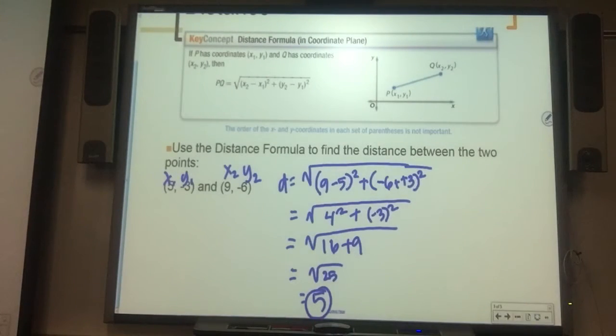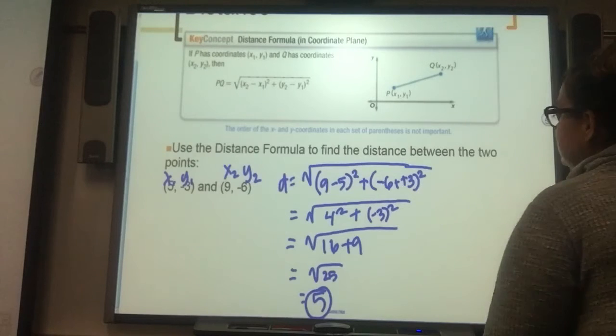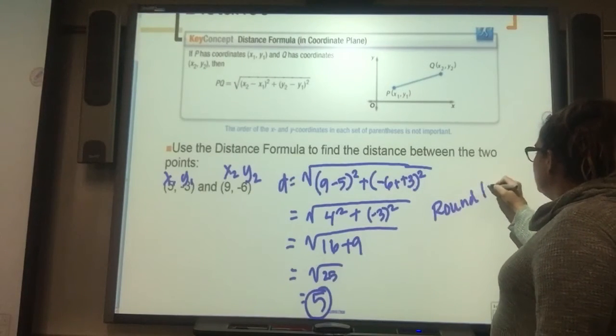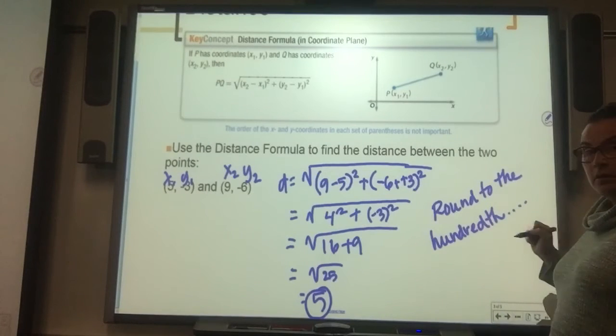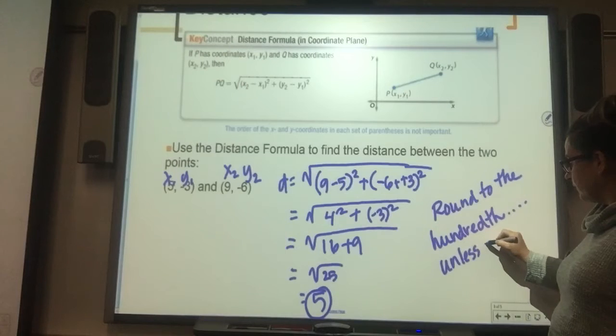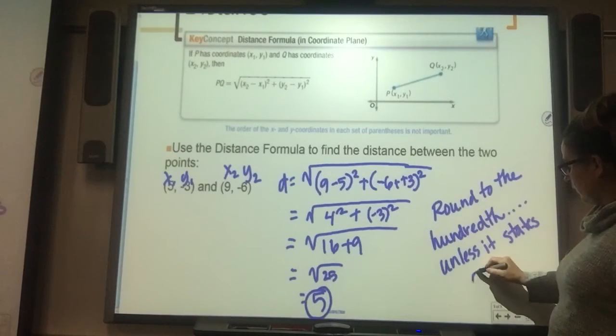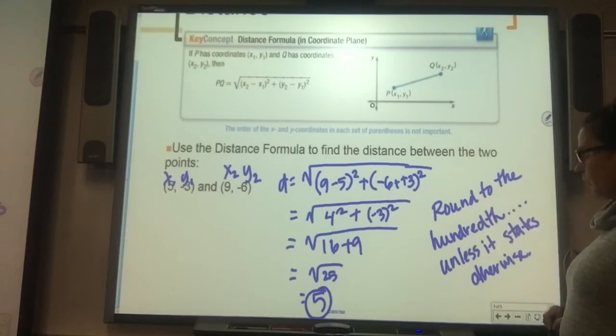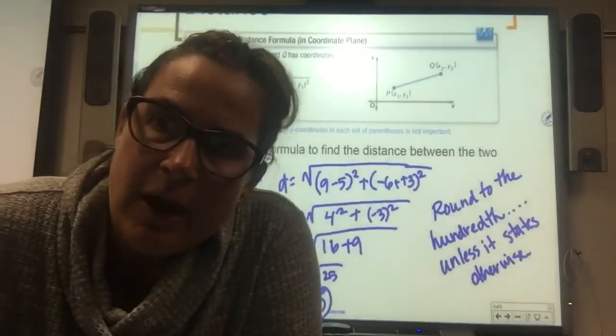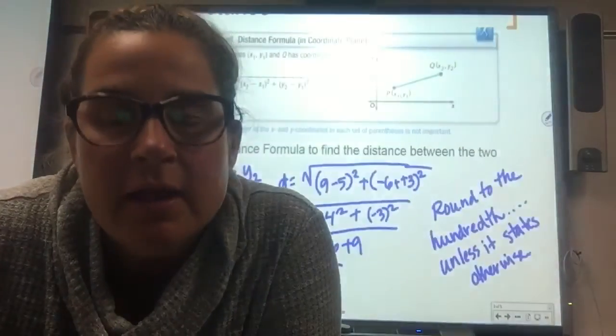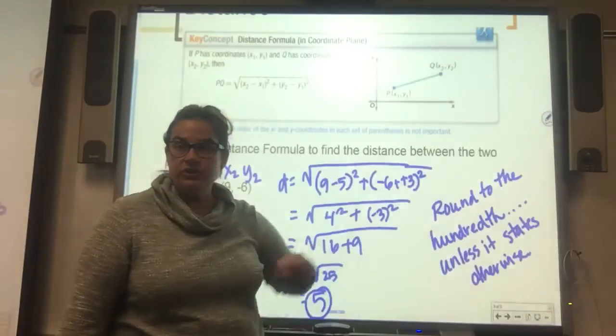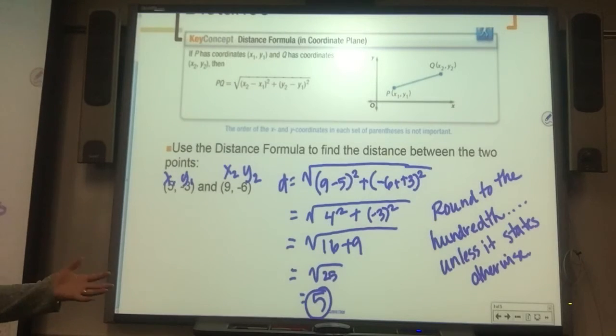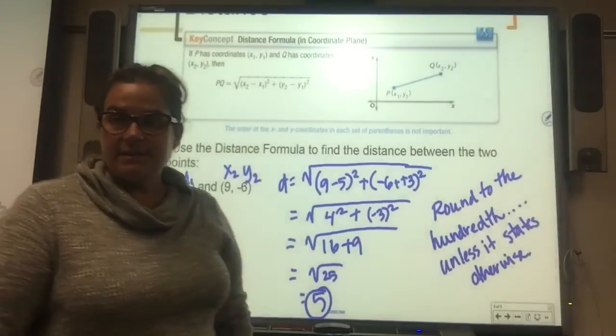This one comes out really nicely. I would not plan on them all coming out nicely. You're going to have some messy numbers. If you have messy numbers, round to the hundredths place unless it states otherwise. So you're going to round to the nearest hundredth unless it says round to the tenth. Then you should follow the directions. This is the distance formula. Watch your computation, watch subtracting a negative, make sure you set it up correctly. Write all of those pieces and you'll be extremely successful.